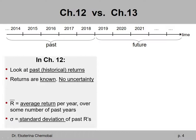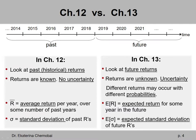In Chapter 13, we will be looking at future returns. The main difference is that Chapter 12 looked at past returns that already happened, while Chapter 13 tries to give our best estimate based on information available to us today about what the return will be in one year, two years, and so on. The future is unknown, so future returns are also unknown, and we face uncertainty about what may happen.